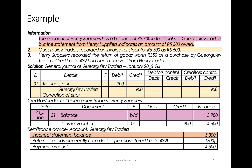Georgia of Traders recorded an invoice for stock for $6,500 as $5,600. In this case, you're going to need to do a general journal entry to adjust it — that will be the easiest way of fixing it. You will simply show the difference of $900, increasing the amount in the trading stock account and increasing the amount owed to Georgia of Traders. You could also do an additional invoice in your creditor's journal, except that if the original invoice was correct, you would need to fix it in the general journal. The general journal is a very common way of correcting errors.